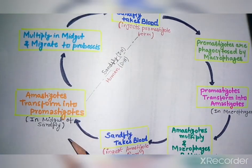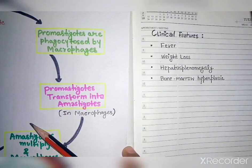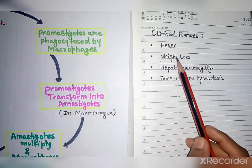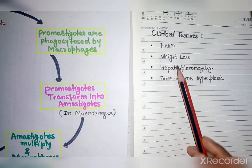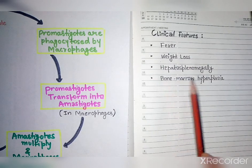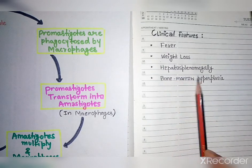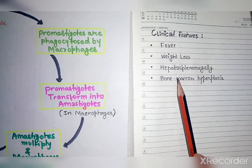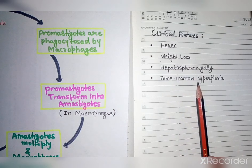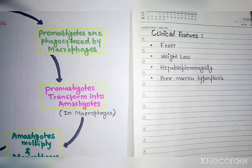The clinical features of Kala Azar include fever, weight loss, and hepatosplenomegaly — where the size of both the spleen and liver increases. Bone marrow hyperplasia is also seen.